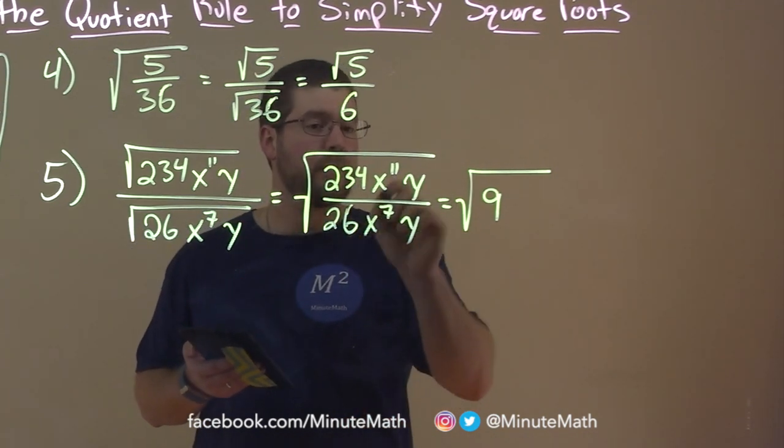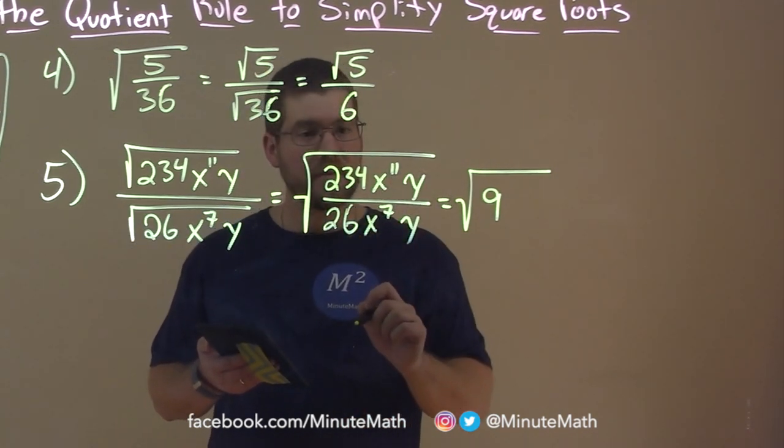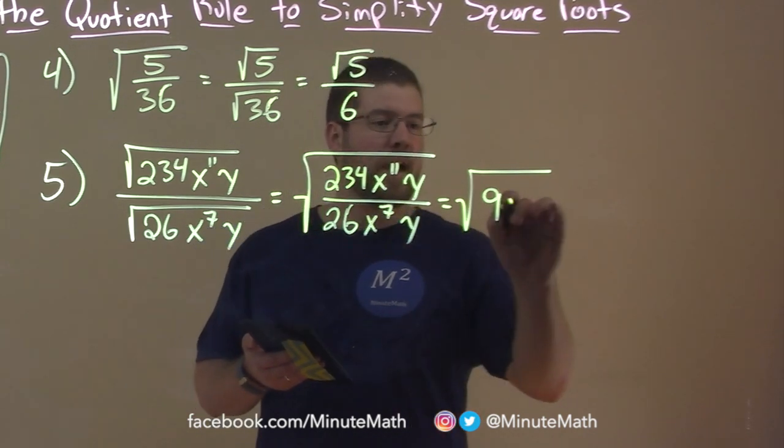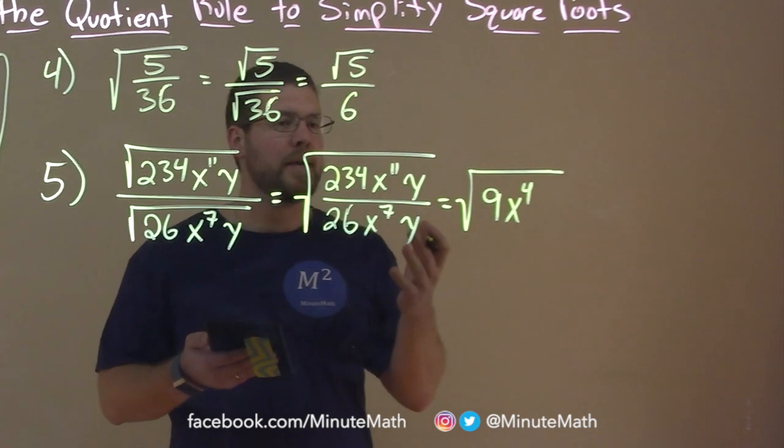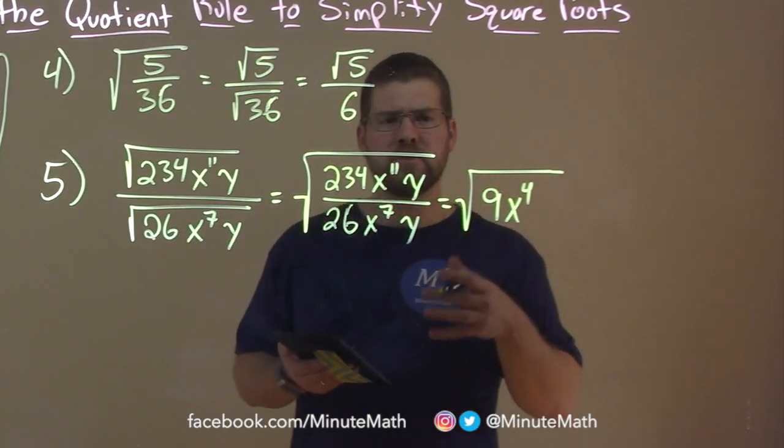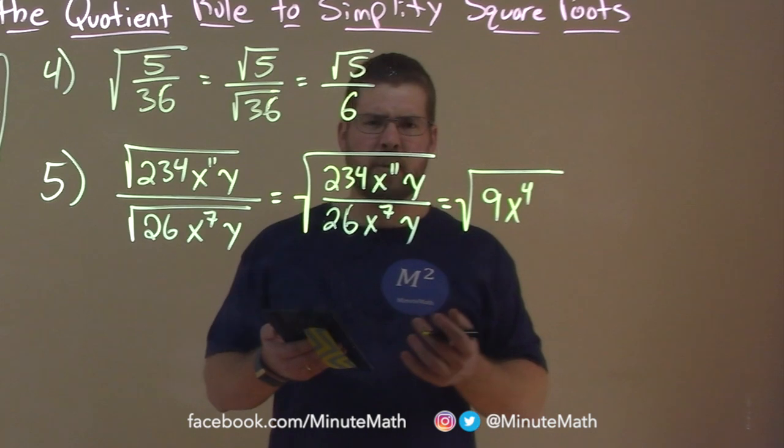And remember, we can subtract the exponents, so 11 minus 7 is 4. So we have x to the 4th power. And lastly, well, y over y is just 1, and we don't need to write that 1 here, okay?